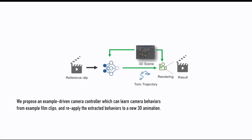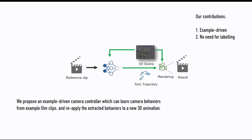In this paper, we propose a technique that takes as input a single or sequence of reference clips with at least two characters, extracts the camera behaviors it is composed of, then, given a 3D animation, is able to compute a camera path which reproduces the extracted camera behavior. Our approach is driven by examples, does not require prior labeling of datasets, and is controllable.